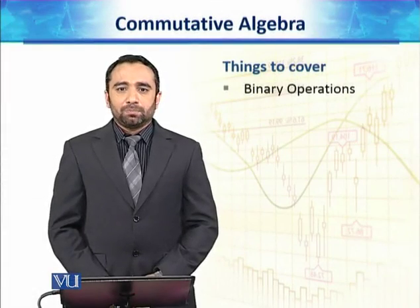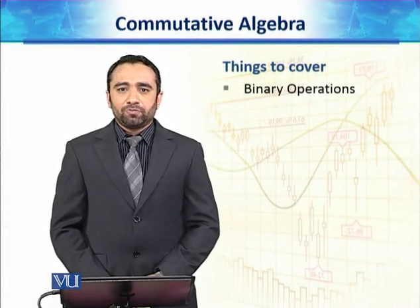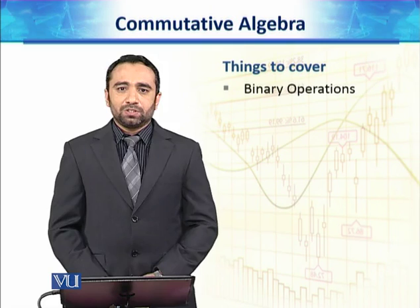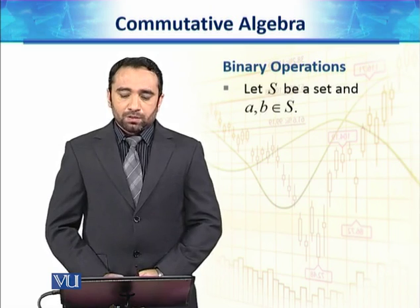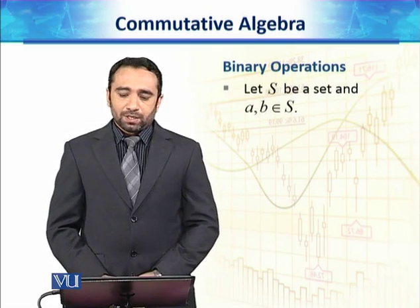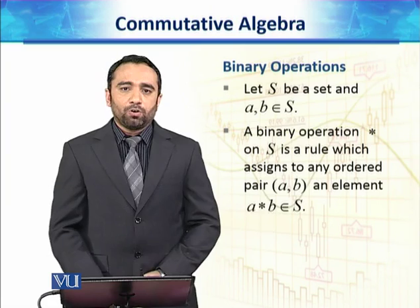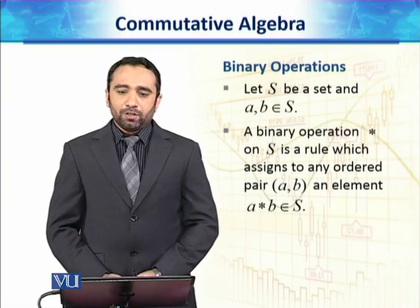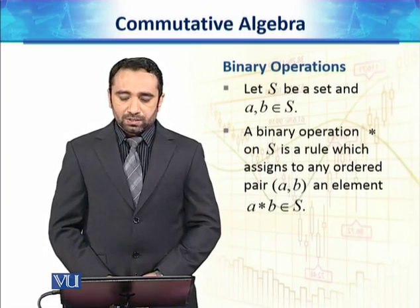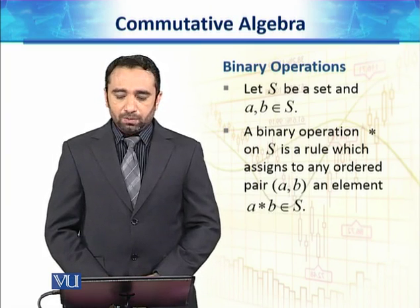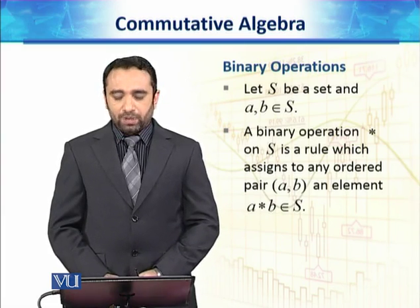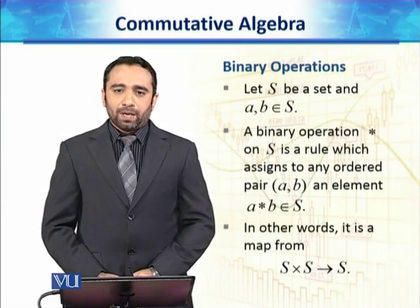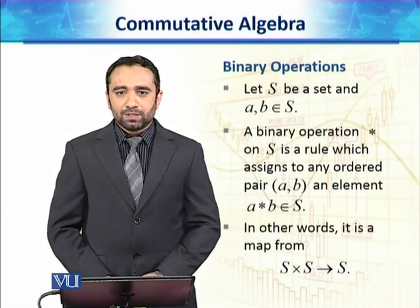Binary operation is different than binary relation, so this is your assignment to see the difference. For binary operation, let S be a set and a, b belongs to S. A binary operation on S is a rule which assigns to any ordered pair (a, b) an element a star b belonging to S. In other words, it is a map from S cross S to S.